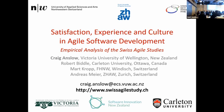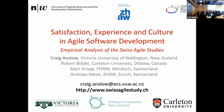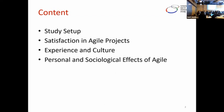A quick show of hands: how many in the room are software developers? How many write code? How many manage software or coding teams? That's what the study was set up to address — how managers understand agile and how software developers perceive agile practices. Craig outlines four areas: satisfaction, experience, and culture in agile development — why people are satisfied with agile, how experience and culture affect how teams practice agile, and personal effects on what people think about specific agile methods.